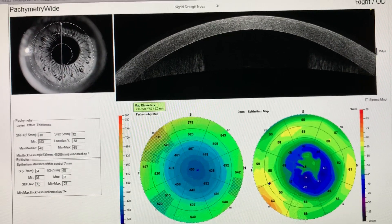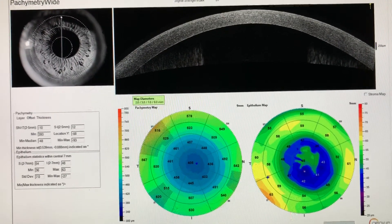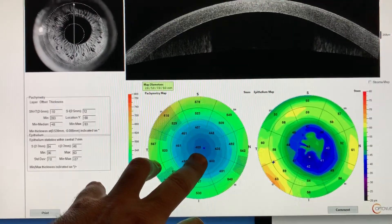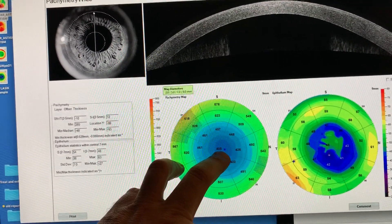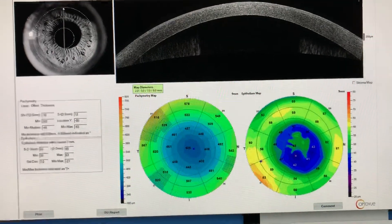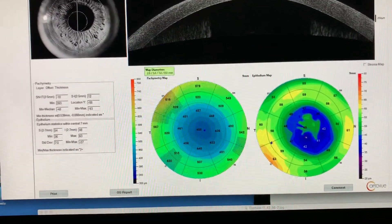Uses gas permeable contact lenses but has had significant irritation. We can see his cornea is quite thin, 400 and a little bit more microns, with significant epithelial remodeling to accommodate that.